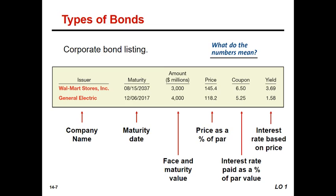The price is expressed as a percentage of par — this bond is at 145.4 percent, meaning it is currently selling at a premium. The coupon rate of the Walmart bond is 6.5 percent, so annually they will pay interest of 6.5 percent, which may be in semi-annual payments of 3.25 percent each. The yield shown is the interest rate based on the current price — the amount theoretically expected based on these prices if nothing else were to change.